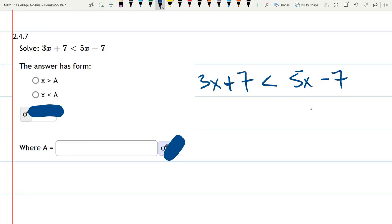We need to collect the x's on one side. Now I'd recommend bring the 3x over by subtracting 3x, but instead I'm going to bring the 5x over here by subtracting 5x. So we have 3x minus 5x is negative 2x.